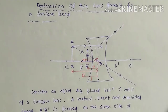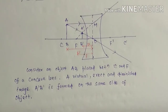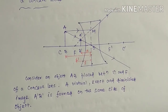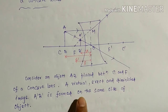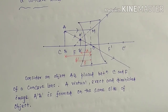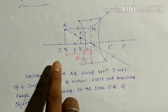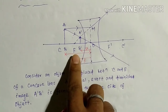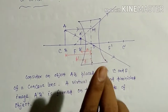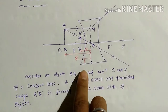So we are going to review image formation for a concave lens from the previous class. When the object is at infinity, the image forms at the left focus. When the object lies at a finite distance, then the image is formed between F and O.